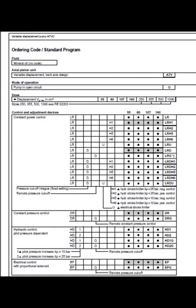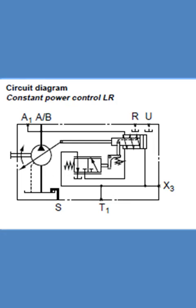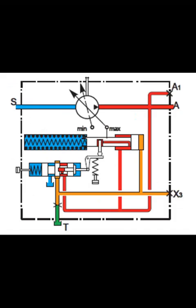Variation: Remote Pressure Cutoff G. A sequence valve with subplate takes over the function of the pressure cutoff. The valve is mounted separate from the pump and the supply piping length should not exceed 5 m. High pressure is supplied from the pump to the valve via port A1, and the valve control oil is fed back to the pump via port X3, causing the pump to swivel back towards VG min. Port E of the sequence valve and T1 pilot drain from the pump must be connected back to tank or cooler. Setting range: 50 bar to 315 bar. Any pressure relief valve included in the circuit must be set to a cracking pressure at least 20 bar above the pressure control setting. The sequence valve and subplate must be ordered separately.